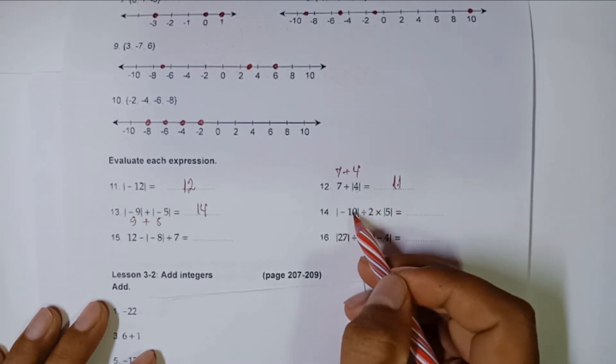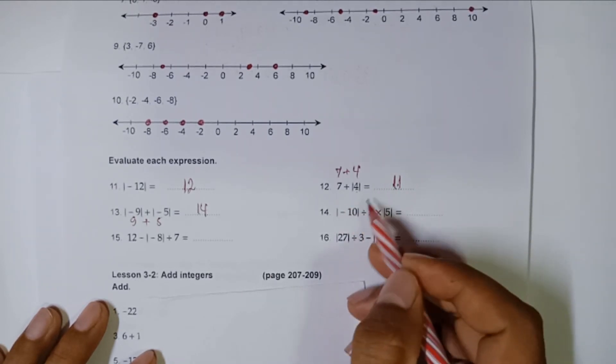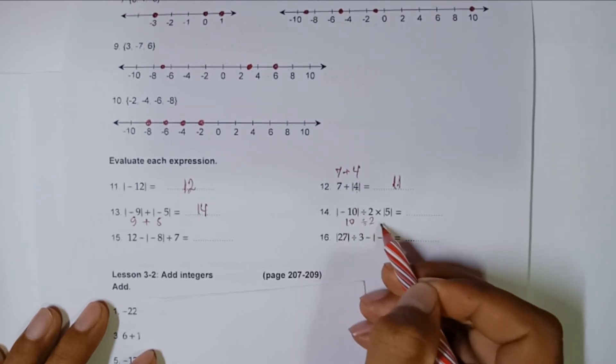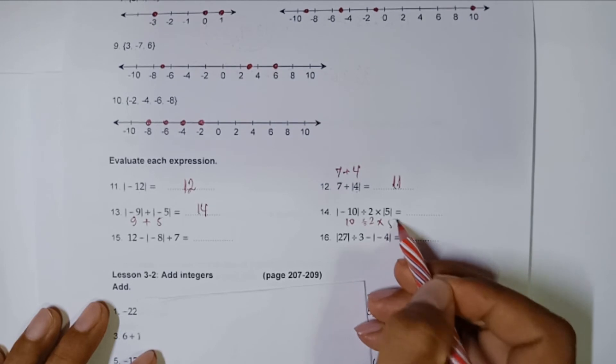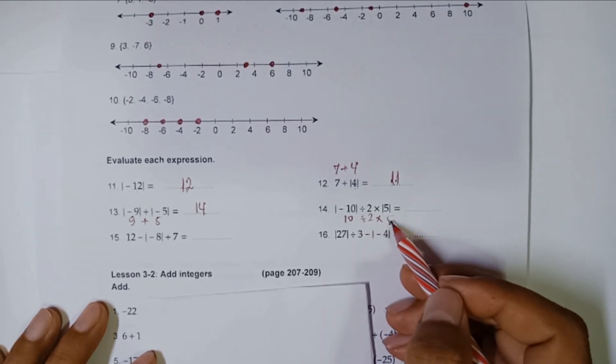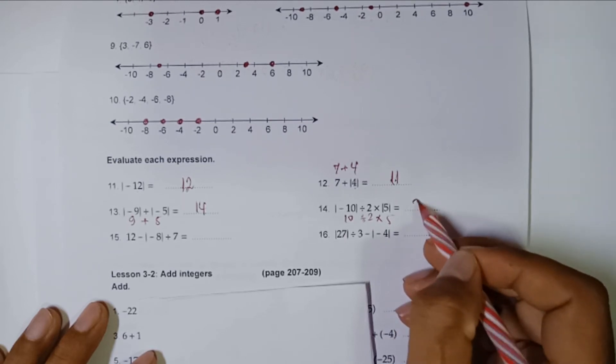This one: negative ten, but since it is within the absolute value sign, it becomes ten. And you divide by two, you times by five. Ten divided by two is five, five times five is twenty-five.